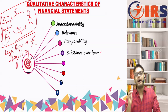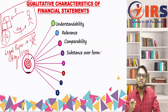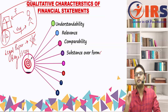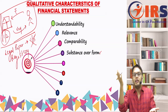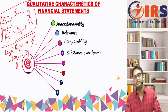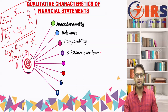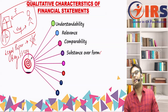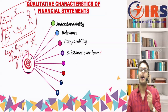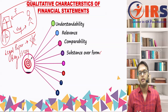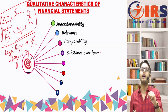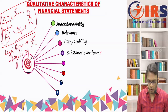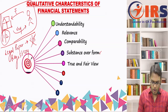Another example of substance over form: when you buy a car, the registration certificate takes a couple of months to arrive — but you are using the car from day one. You are the economic owner from the purchase date. So you record the transaction when it economically occurred, not when the legal formality is completed. That is substance over form.